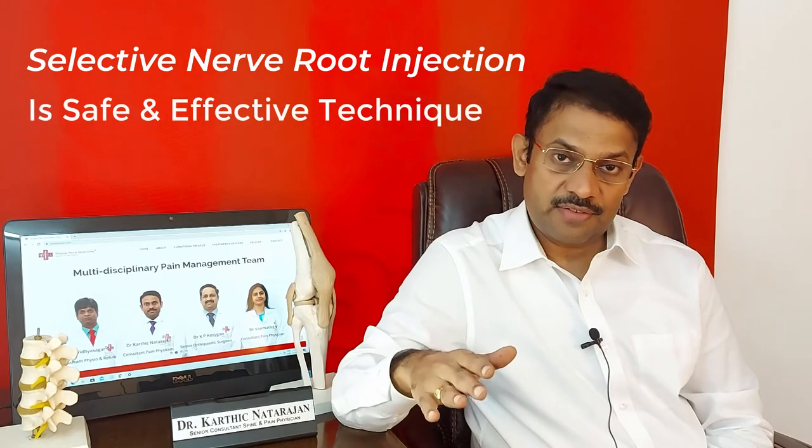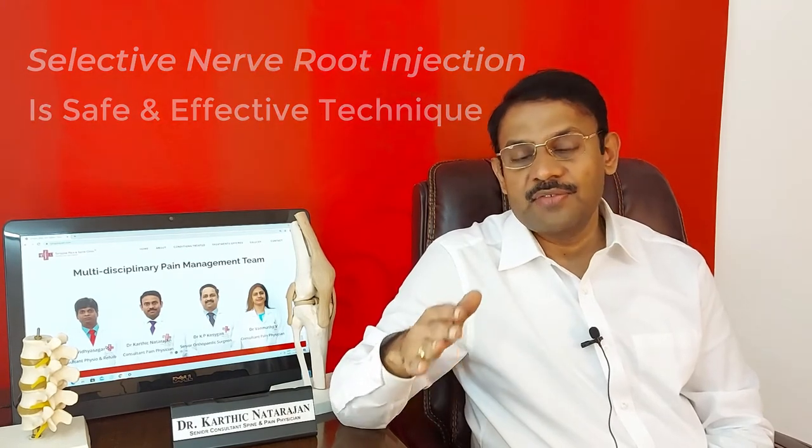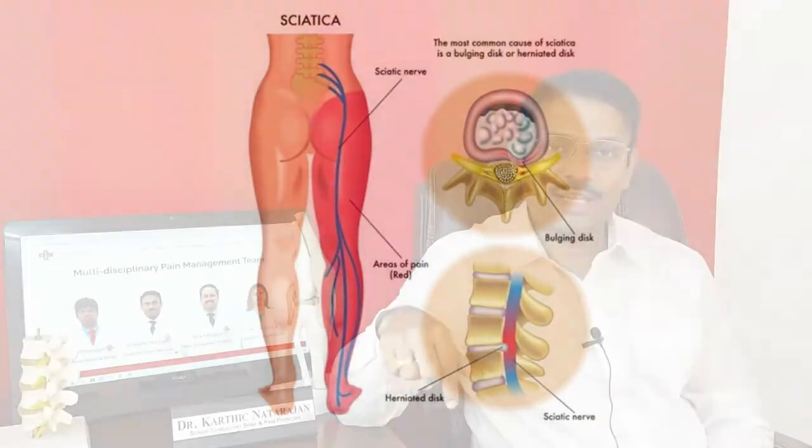Selective nerve root injection is a safe and effective technique — an injection done from outside to reduce or relieve patients of back pain along with sciatica. Patients who have back pain going down to the leg will get very good relief from selective nerve root injection.